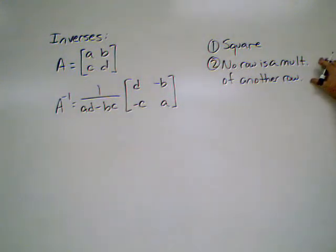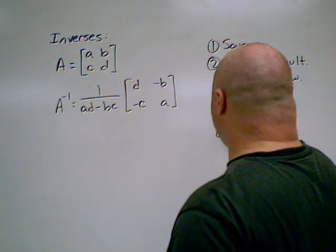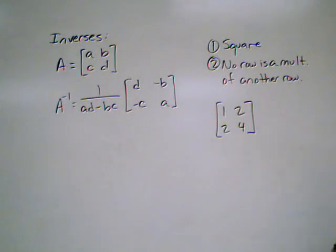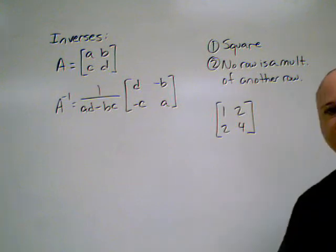Second, no row in the matrix can be a multiple of another row. For example, we have a matrix 1, 2, 2, 4. Notice that our second row is double our first row. So if we multiply this by 2, we get these numbers. Therefore, we cannot invert this matrix.